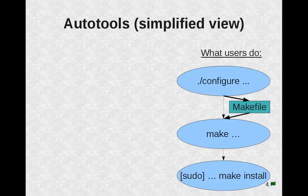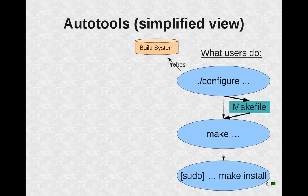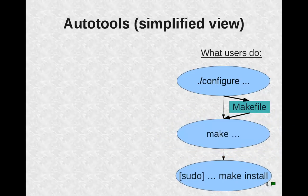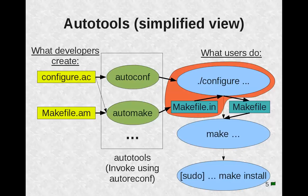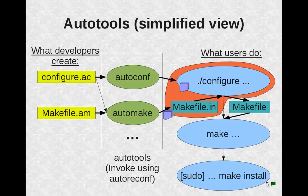To help understand the AutoTools, it first helps to understand what users who need to compile software would typically do. Typically users would type ./configure, which probes the system and generates a makefile, then type make, then make install, with various conventional options. AutoTools makes it easier to support this, since developers can simply create configure.ac and makefile.am files. Those two files are run through AutoConf and AutoMake respectively, generating a configure file and makefile.in, which configure uses to generate the makefile. These tools are typically invoked by running autoreconf, which runs them in the right order.